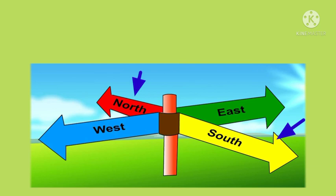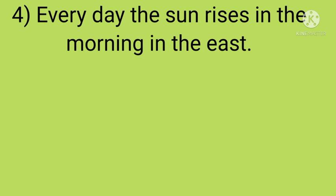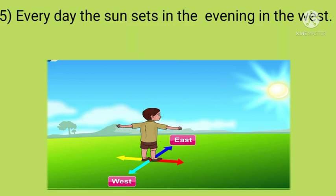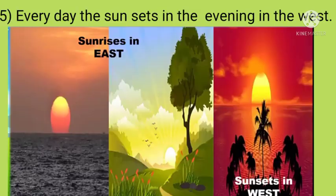Every day the sun rises in the morning in the east — from the east side only the sun rises. Fifth, every day the sun sets in the evening in the west. I hope you have understood today's lesson. Remaining explanation we will continue in the next video. Thank you.